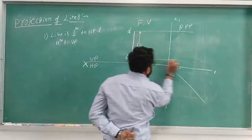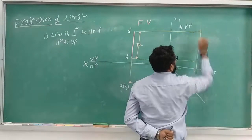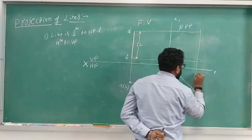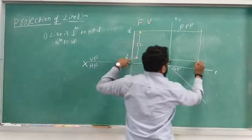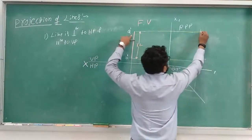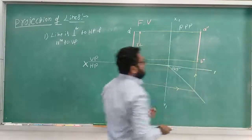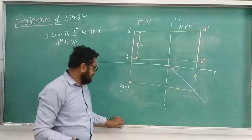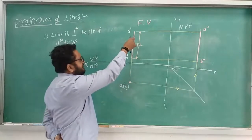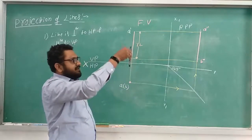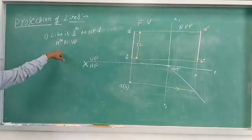Extend the line from both ends, and from the top view draw a line, then take a diversion at 45 degrees. The intersection points give the side view. Here A and B come in the same line — this point becomes B-double-dash and this point becomes A-double-dash. Join these two points to get the side view line. So when the line is kept parallel to VP and perpendicular to HP: in the front view it shows the true length as a straight line, in the top view it looks like a dot, and in the side view it looks like a straight line.